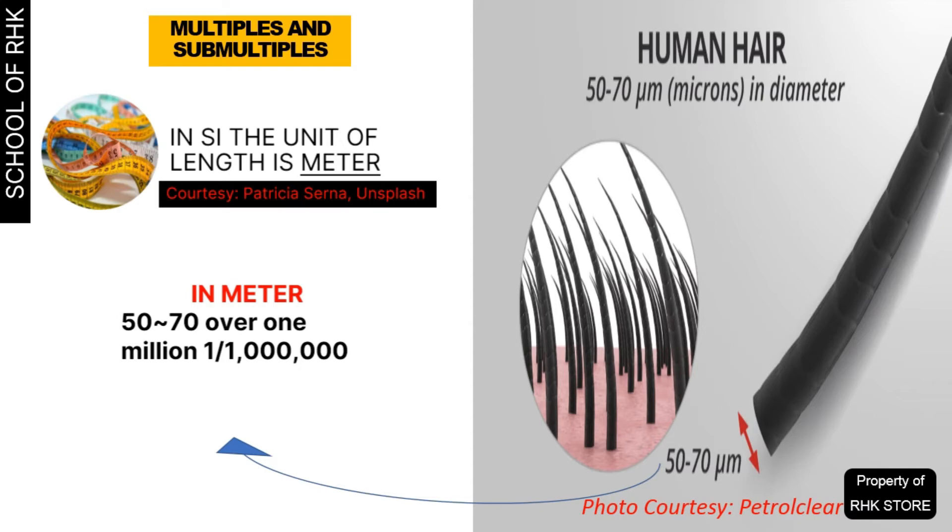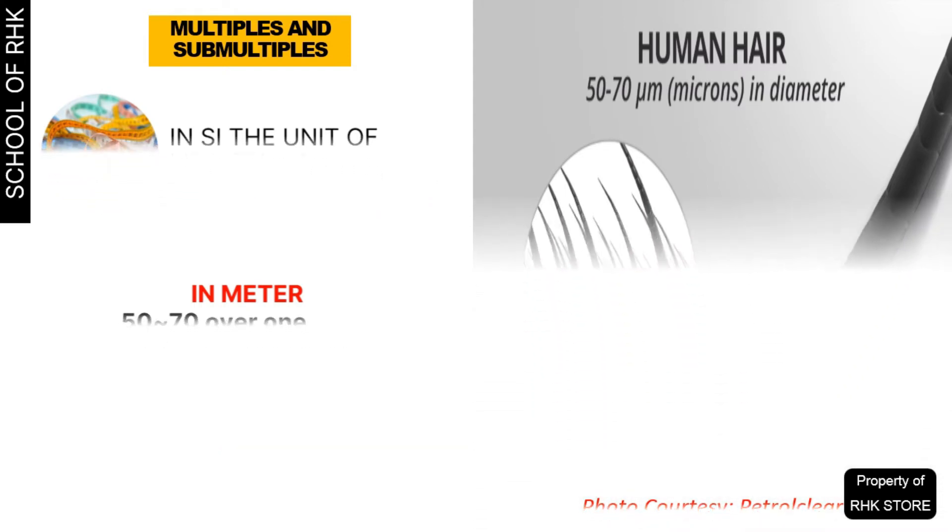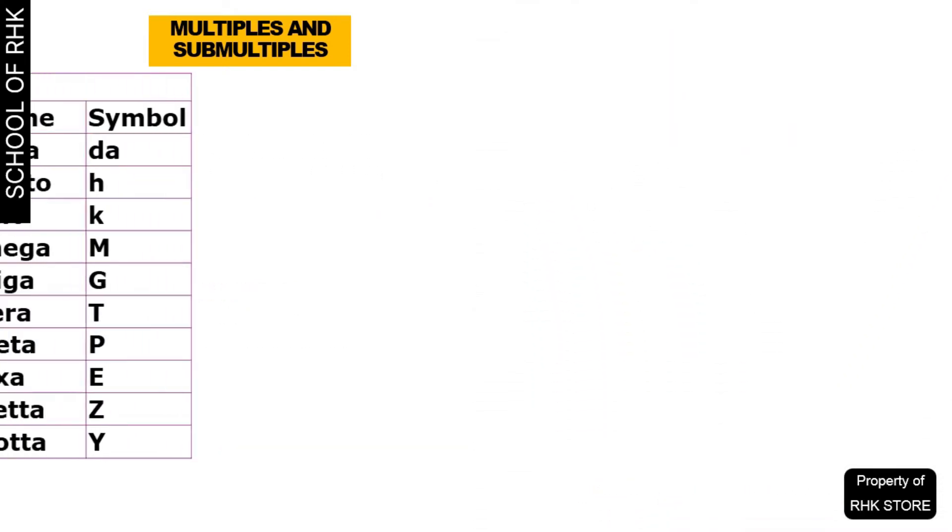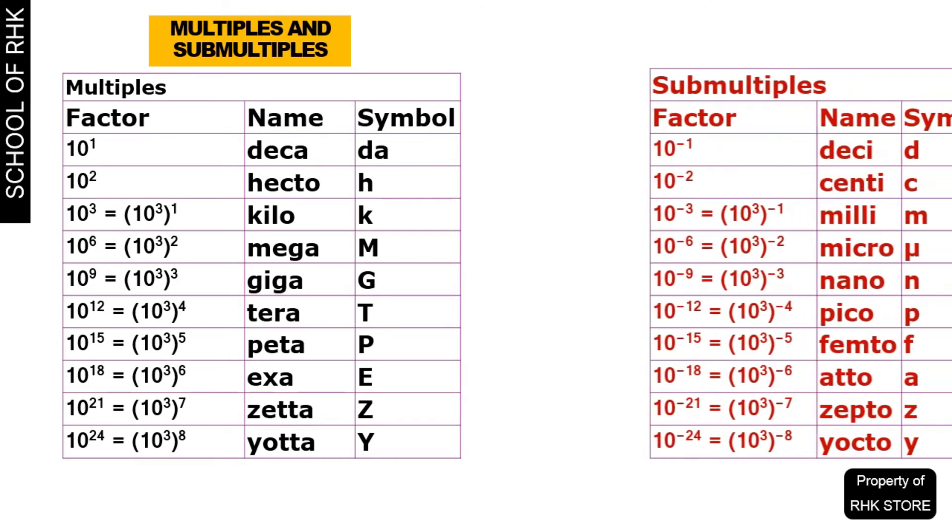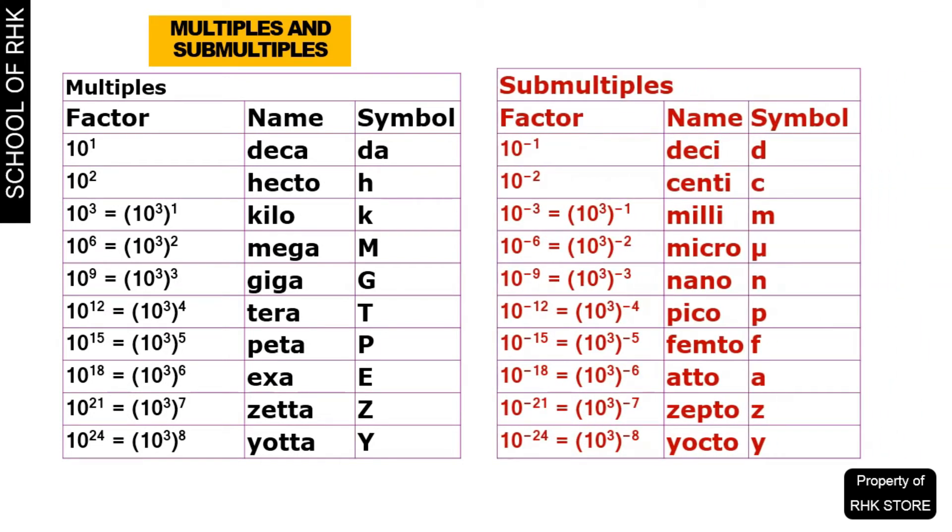Hence, multiples and submultiples are required. Multiples are factors used to create larger forms, whereas submultiples are factors used to create smaller forms of SI units.